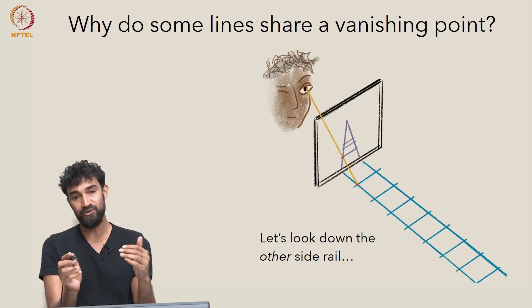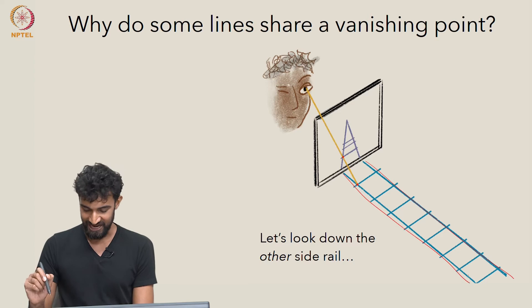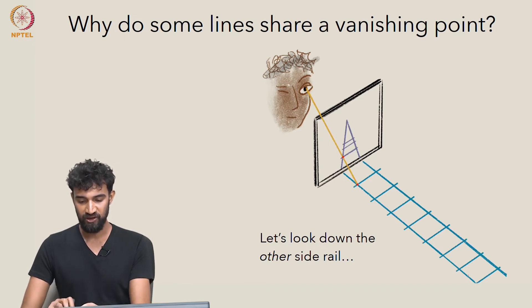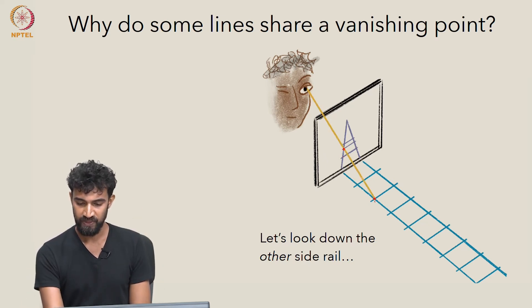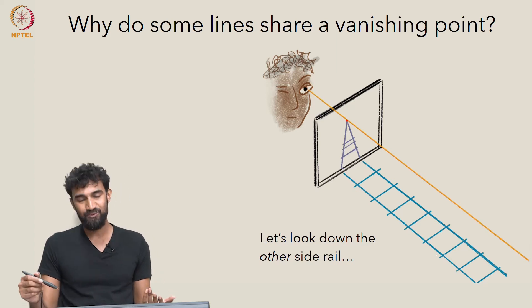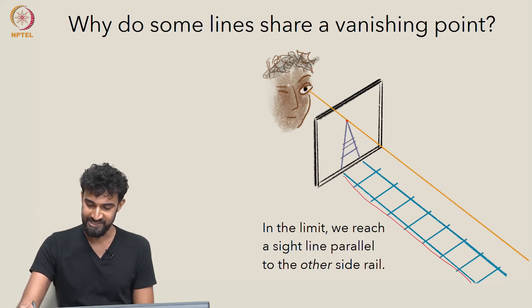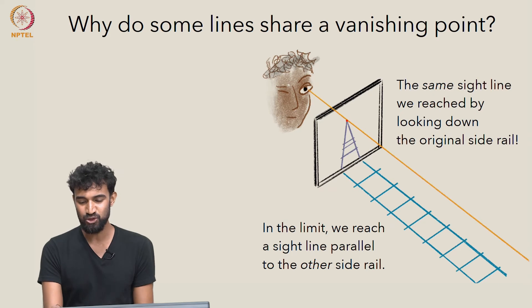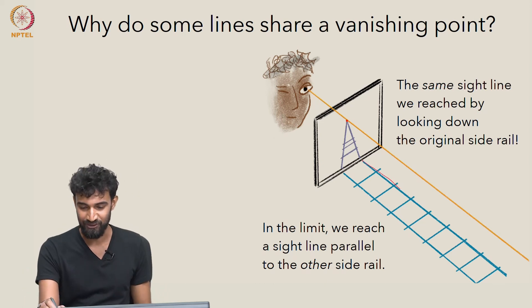So let's take a look down the other side rail. All this time we've been looking down this side rail; now let's look down this other side rail. And when we do that, we will again look further and further along it, painting out an image on the picture plane. As we look further and further along it, we end up at a limiting sight line which is parallel to that other side rail. Except this other side rail is parallel to our original side rail, so we actually end up with the same sight line that we reached the first time around when we looked down our original side rail.